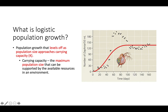In this graph right here, carrying capacity is going to be depicted by this leveled off portion of the graph. Whenever you see the graph start to level off like this, this is representative of what the carrying capacity for that environment is. In this situation, it would be somewhere around maybe 130 to 135 individual organisms.